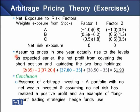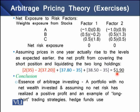For condition three, assuming prices rise to the actual levels after one year, the net profit from covering the short position in A and liquidating the two long holdings in B and C is $1.90. We realize a loss on the short sale of stock A but earn profit on stocks B and C, with a net gain of $1.90 — satisfying condition three. The conclusion is that a portfolio with no net wealth invested and no net risk has realized a positive profit, which is the essence of arbitrage investing and an example of the long-short trading strategies commonly used by hedge funds.